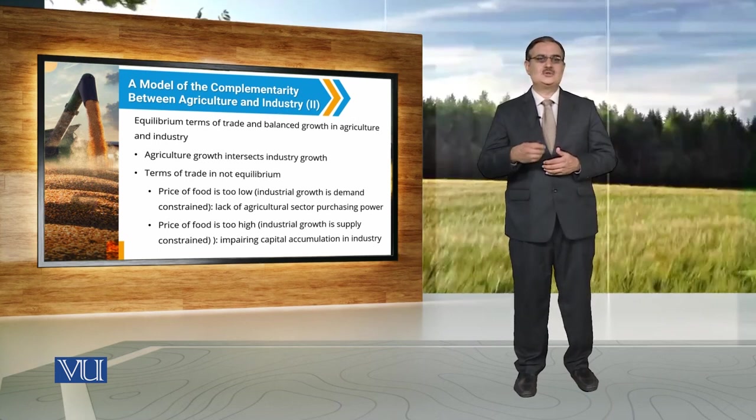It might also be possible that prices of food are too high. When prices of food are too high, industrial growth is supply-constrained. This means that because of high food prices, there is less capital accumulation in the industry.